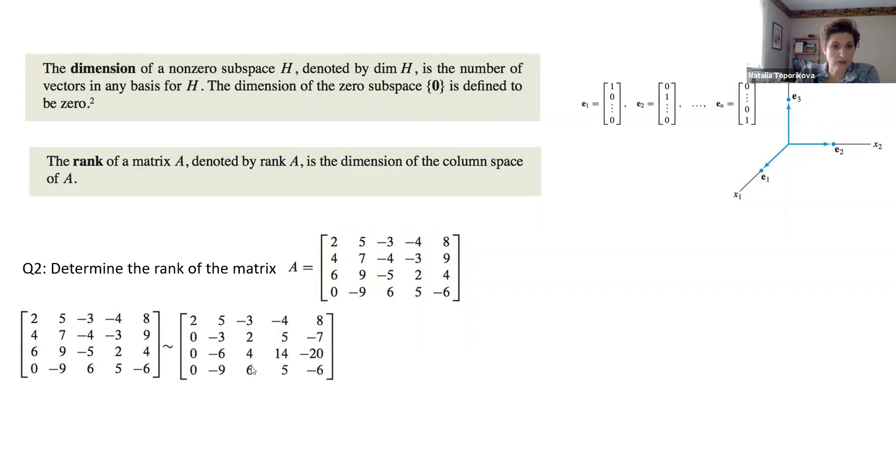We start with our matrix and just basically reduce it to the echelon form starting from the first column, then go second, third. I'm not going to bore you with reducing this matrix, just write you a final echelon form. And now we will inspect the columns of our matrix.